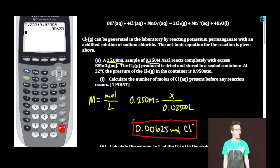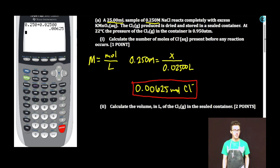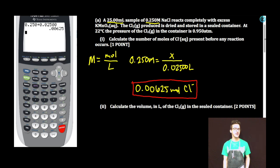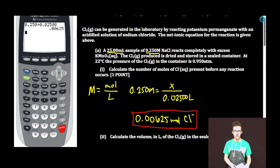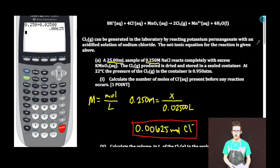Free response, off to a great start. Subpart II. Calculate the volume in liters of the chlorine gas in the sealed container. I'm going to scroll back up to my equation. We just determined the number of moles of chloride ion.